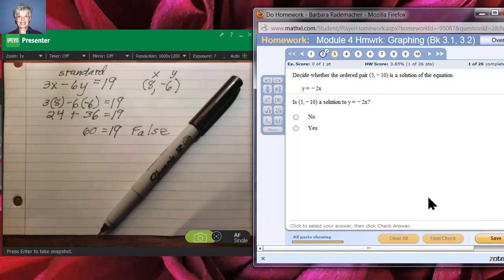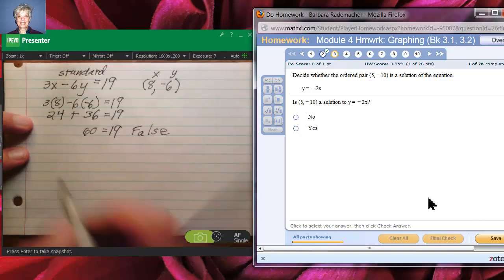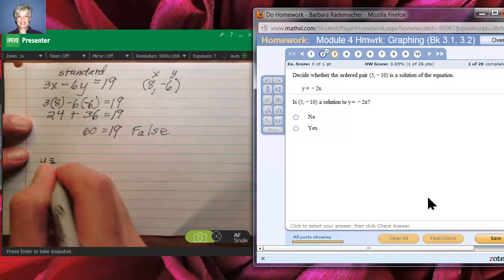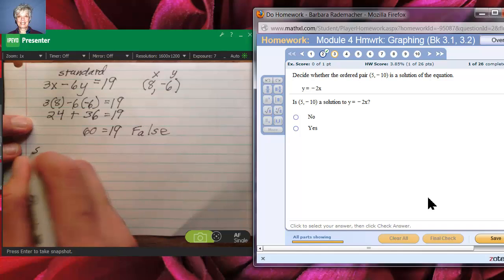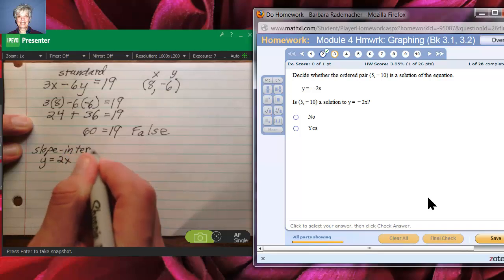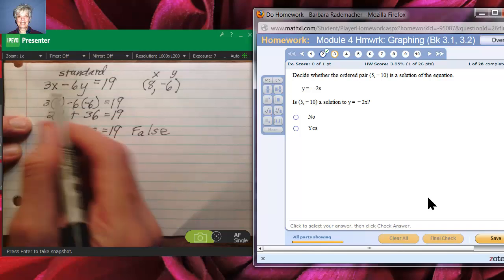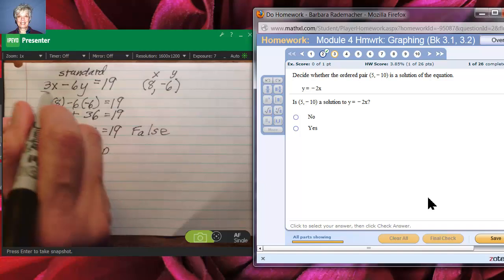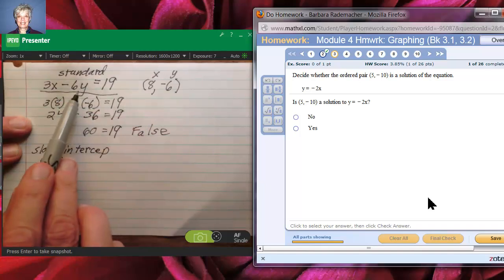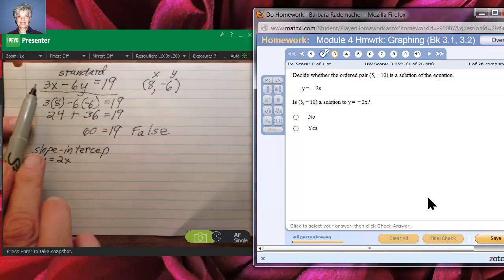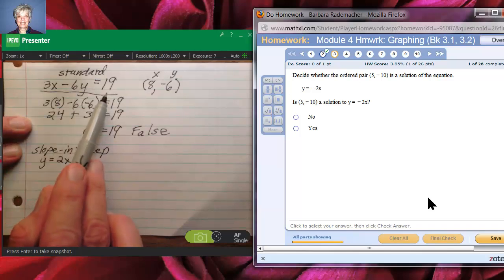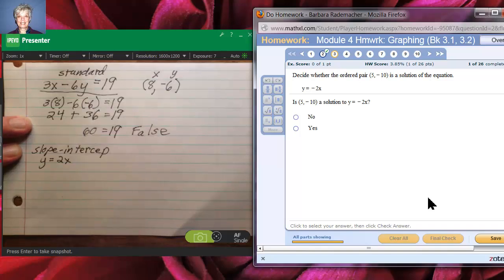Now number three is asking the same kind of question, only now this equation is in what we call slope-intercept form. It's the other form of a line. Lines either come this way, usually everything is usually—lines either come this way with the x and y term together, usually on the left side of the equal sign and the number on the right side of the equal sign, or they come in the y equals form, and this y equals form is called the slope-intercept form. You'll find out why later.